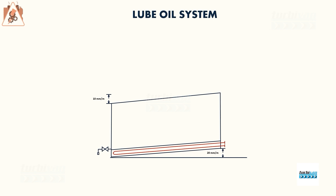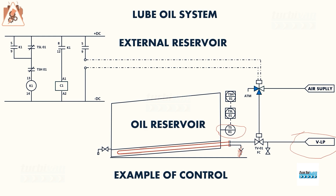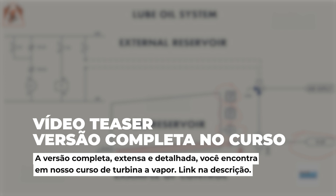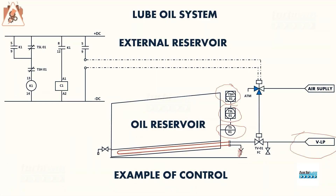Looking at the base of the tank with its coil, note that the geometry is not rectangular — it has a certain inclination and slope. Importantly, a temperature switch is used here. It generates two states: TSL (Temperature Switch Low), which activates when oil temperature is too low, and TSH (Temperature Switch High), which activates when the temperature is too high.